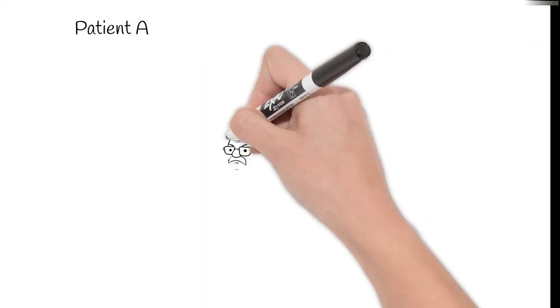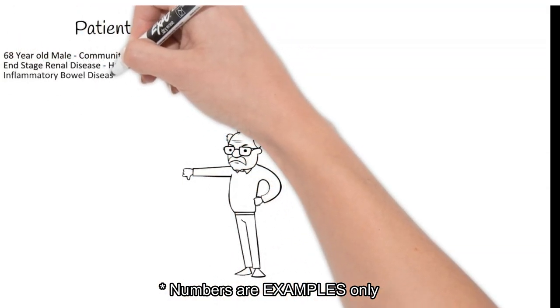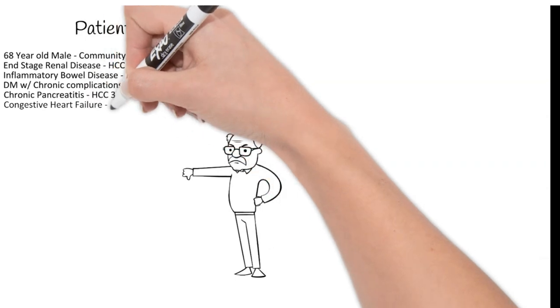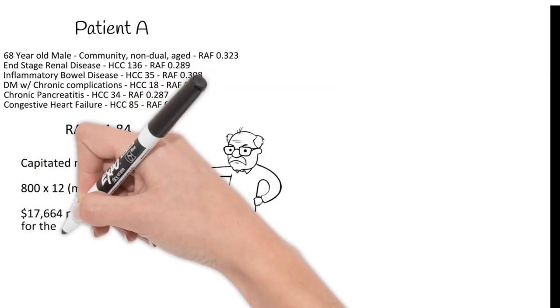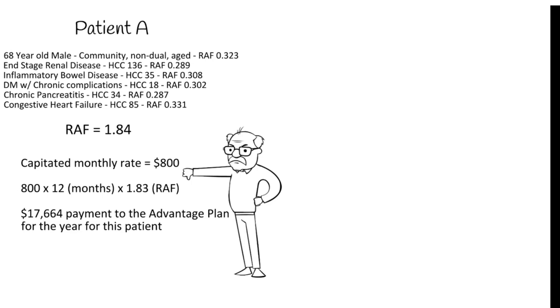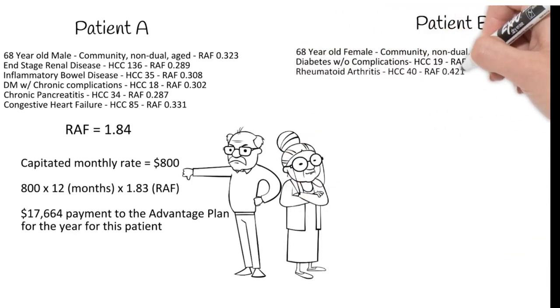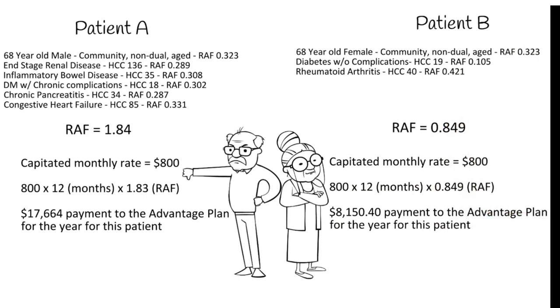The last thing I want to stress is the risk adjustment factor calculation and how to calculate payment to the insurance plan. Patient A is a 68-year-old male with end-stage renal disease, inflammatory bowel disease, diabetes with chronic complications, chronic pancreatitis, and congestive heart failure. His RAF is 1.84 times a capitated monthly rate of $800 times 12 months — his annual payment to the advantage plan would be $17,664. Patient B is a 68-year-old female with diabetes without complications and rheumatoid arthritis. Her RAF is 0.849, giving her $8,150.40 to the advantage plan for the year.